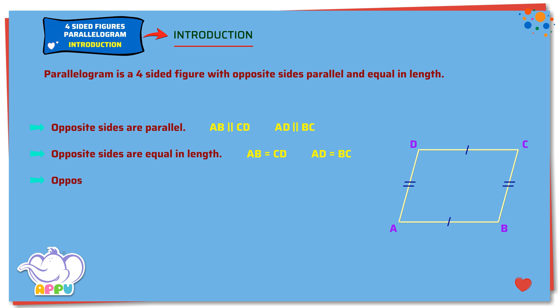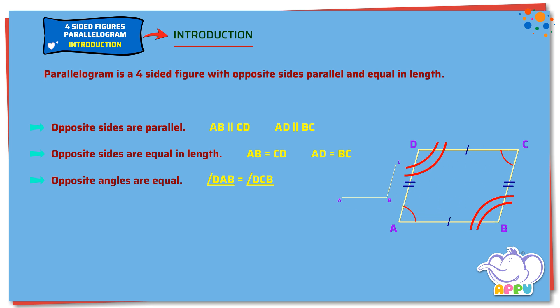Opposite angles are equal. Here angle DAB equals angle DBC, and angle ABC equals angle ADC.